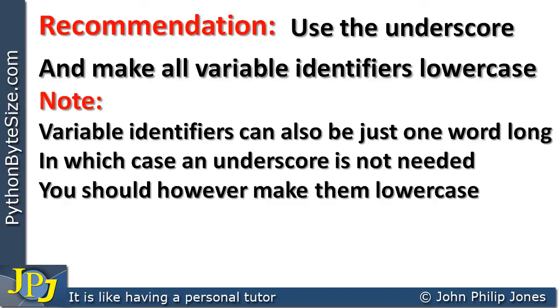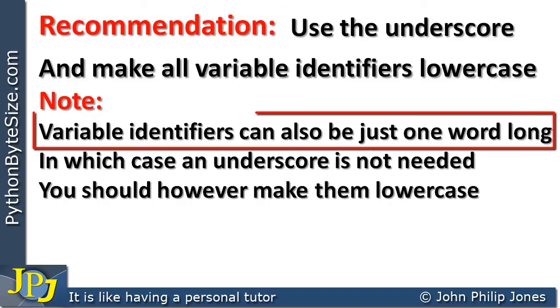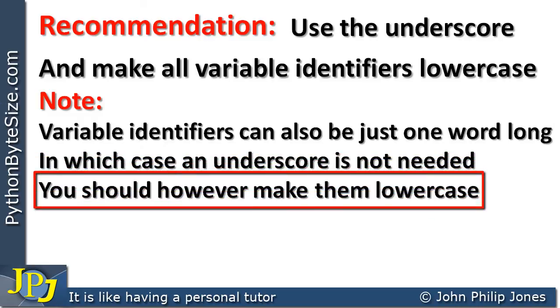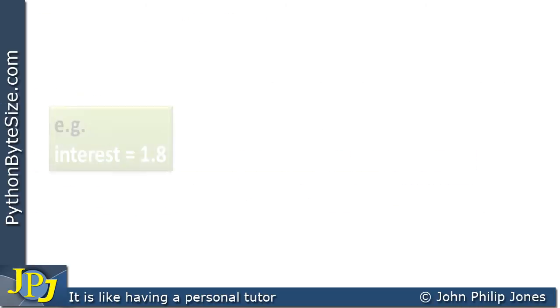We should also note, however, that variable identifiers can just be one word long, in which case an underscore is not needed, but we should make them lowercase. For example, we could have this here: interest = 1.8, where this could be the interest on a bank account or something like that.